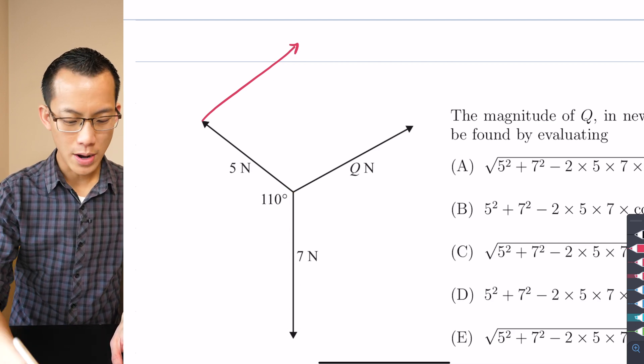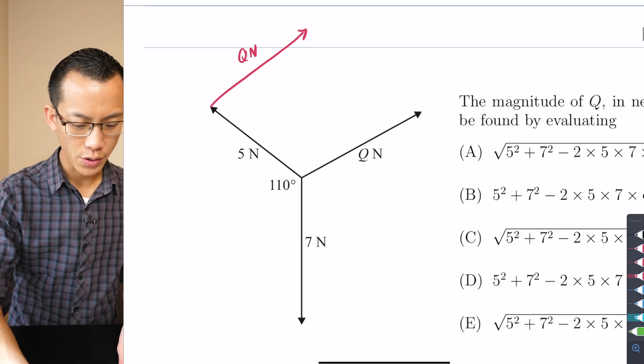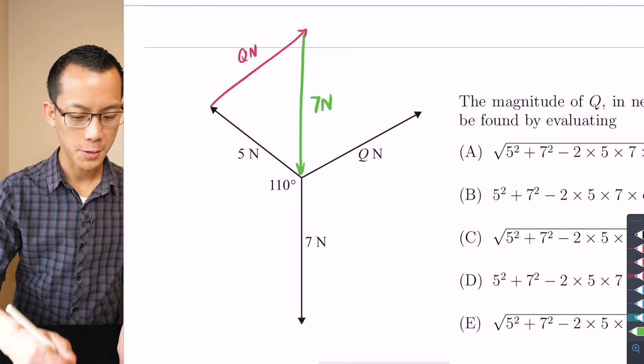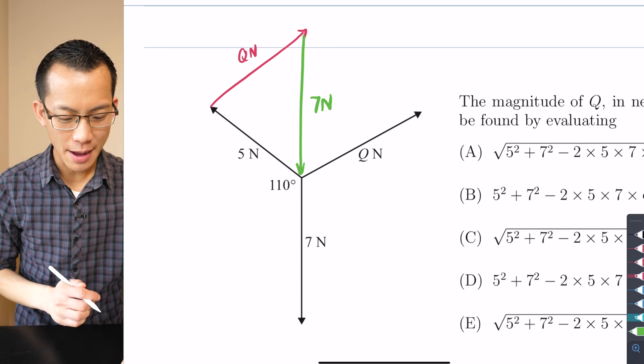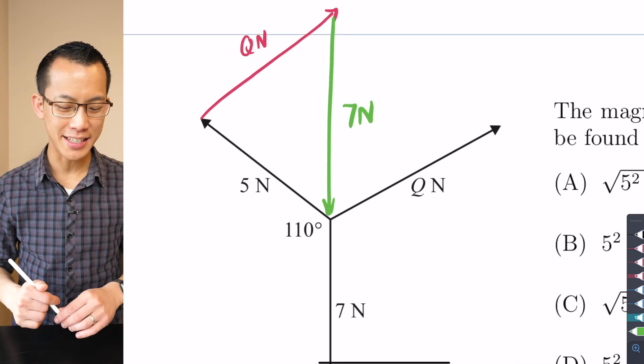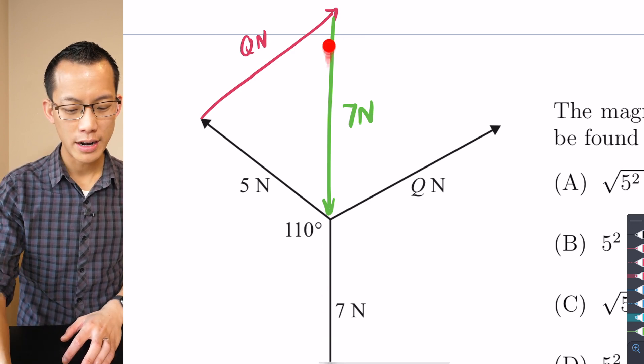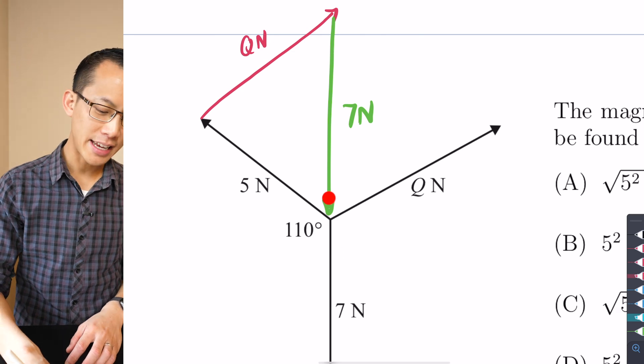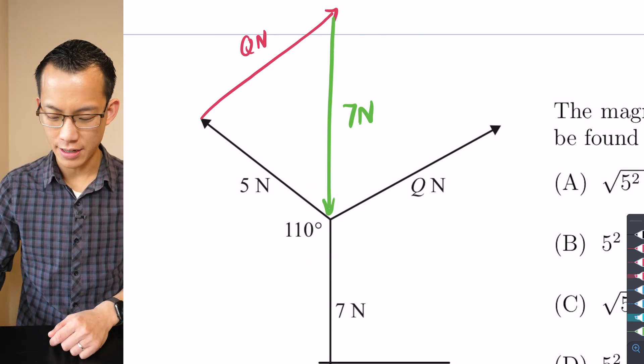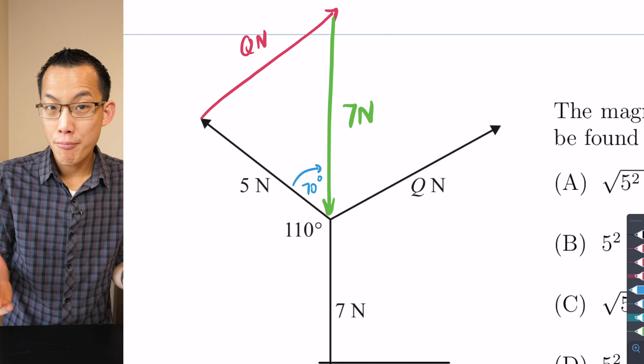I'll mark this in as Q Newtons then I'm going to finish it off with this which is 7 Newtons. Now you can see at this point I'm going to pull a similar trick that I did in my previous examples, because I've got this straight line, this is one long vertical line. I can take advantage of the fact that these angles along here have to add up to 180 degrees, so that gives me 70 degrees on the inside here.